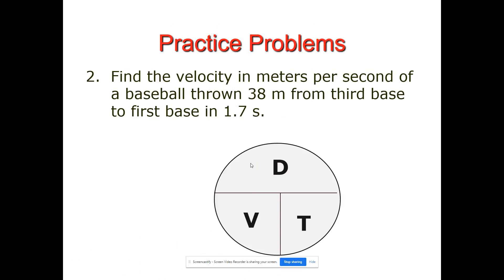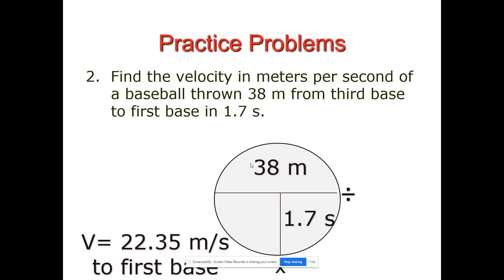Pause the video and work out number two. We're finding the velocity in meters per second of a baseball thrown 38 meters from third base to first base in 1.7 seconds. Distance is 38 meters divided by time 1.7 seconds, giving 22.35 meters per second. Include a direction: from third base to first base.